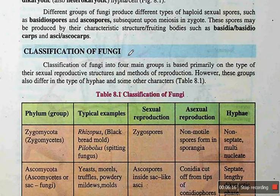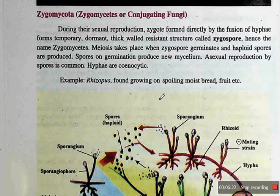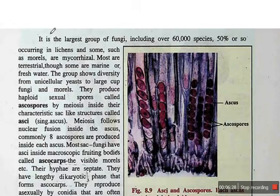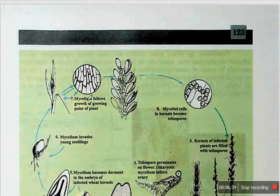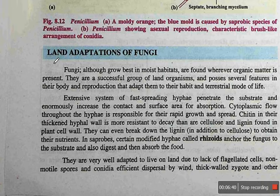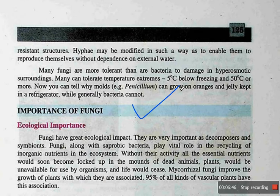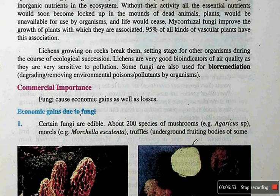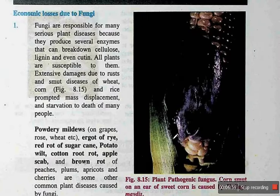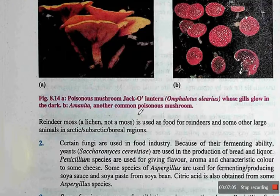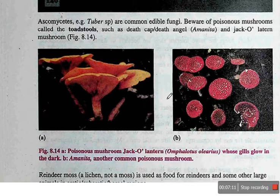After that, there is Classification — the information is all included and it is important. When you talk about the topic of Reproduction, it is the most important. Ecological Importance and Commercial Importance are also included. Gains and Losses are included — Loss is the most important thing, while gains are less critical but still worth knowing.